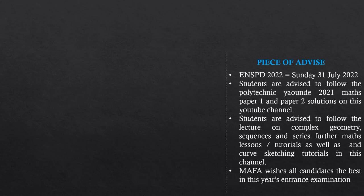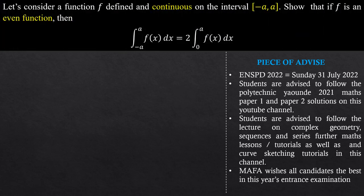For part A, we have been given a function f continuous on a closed interval, and asked to show that the integral from −a to a equals two times the integral from 0 to a, provided f is an even function. The keywords are: continuous, the interval, and even function. Since the function is continuous, we split this integral into two different integrals and use a substitution.